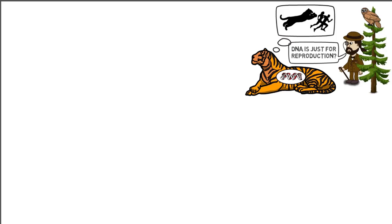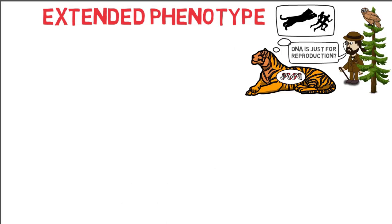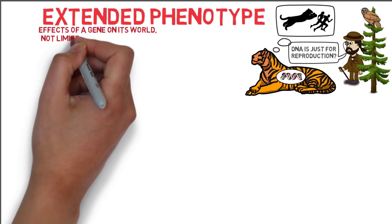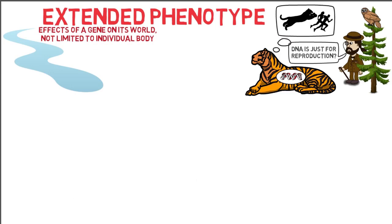To address this misconception, Dawkins turns to the concept of the extended phenotype, which looks at the phenotypic effects of a gene as all the effects it has on the world, instead of simply those limited to the individual body. Examples of this would be beaver dams, bird nests, the caddisfly's house, and spiderwebs.